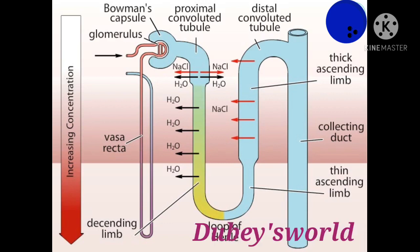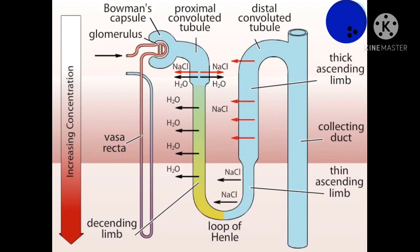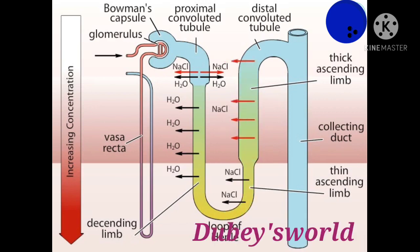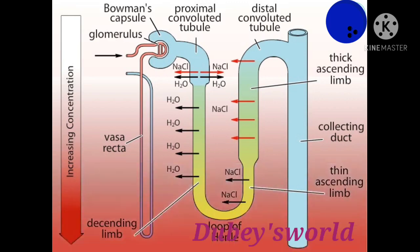The thin ascending limb is not permeable to water. It is, however, permeable to sodium and chloride ions. Since the tubule fluid is more concentrated than the surrounding tissue, sodium and chloride ions diffuse out. The thick ascending limb continues to move sodium and chloride ions to the medulla by active transport. As a result of this process, the tubule fluid reaching the distal convoluted tubule is less concentrated than the blood plasma, and the solutes that have been left behind in the renal medulla have created a concentration gradient in the surrounding tissue fluid.